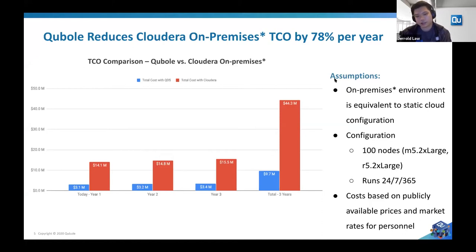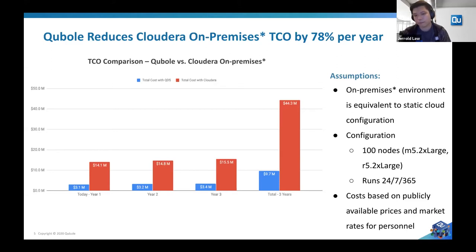Here's a slide showing a comparison between an on-prem solution and a cloud solution. The total cost of 100 nodes of r5.2xlarge running 24/7 all year round is about 10 million dollars on an open data lake cloud solution, compared to an on-prem solution with the same setup that could cost you about 4.5 times more. This information can be easily found publicly — if you search online for prices in Cloudera and Cubo, you can see a price comparison for a 64 GB memory, 8-core instance with a pricing structure similar to this.